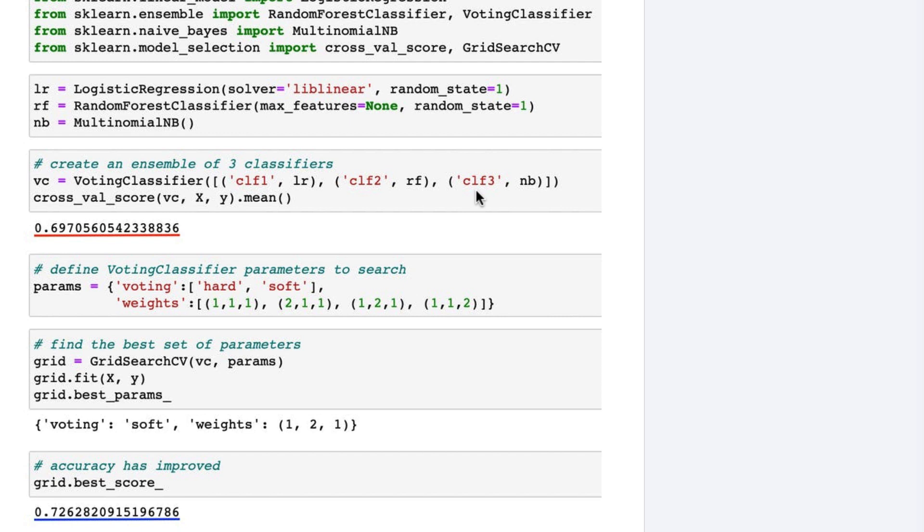One final note is that if you're using voting regressor instead of voting classifier, you will only tune the weights parameter since voting regressor does not use a voting parameter.